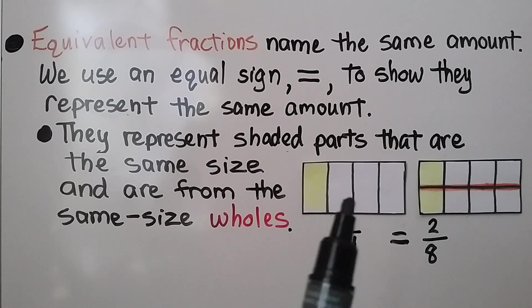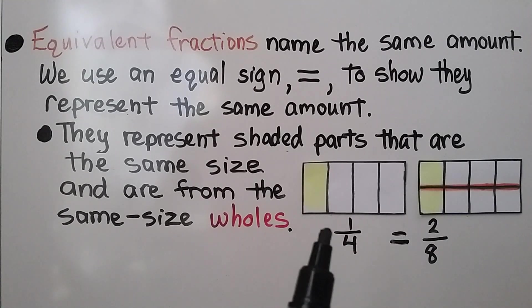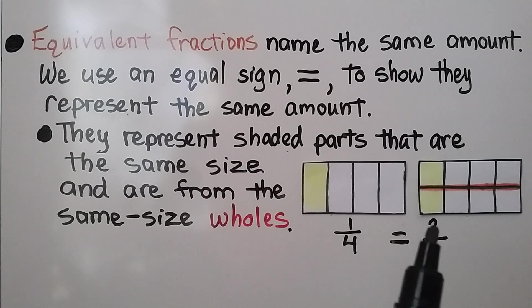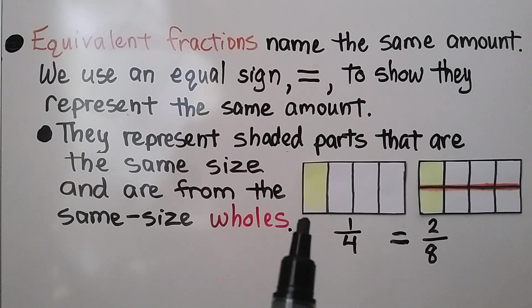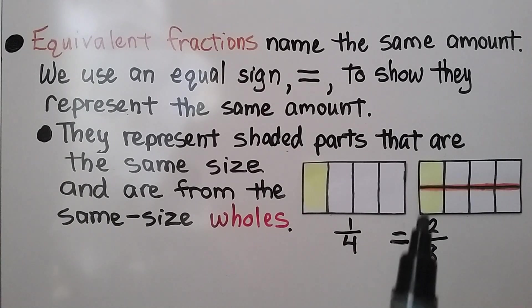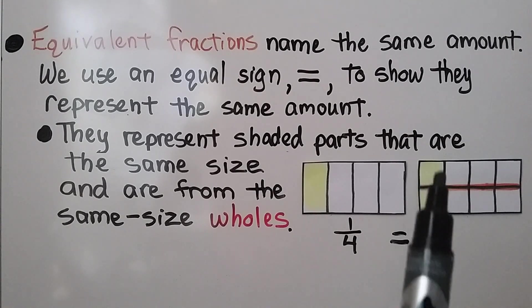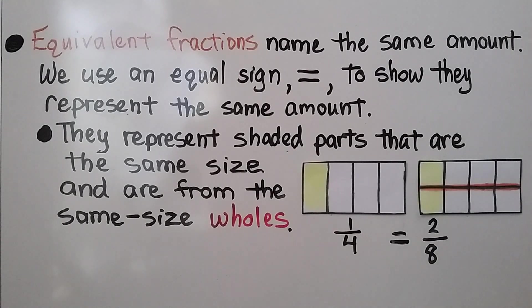Here we have two rectangles that are the same size. This one is split into four equal parts. This one was split into four equal parts and then into eight equal parts by a vertical line drawn down the middle. This one-fourth shaded part is the same amount as these two-eighths shaded parts. So one-fourth is equal to two-eighths.